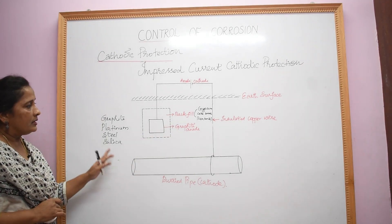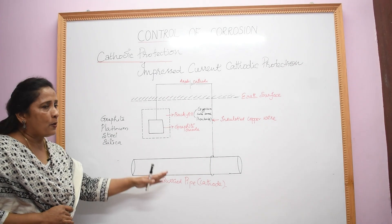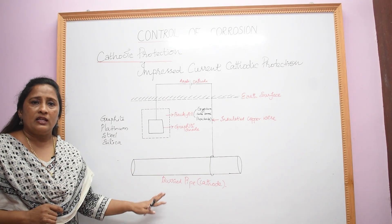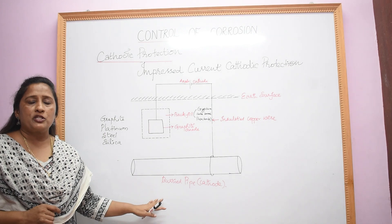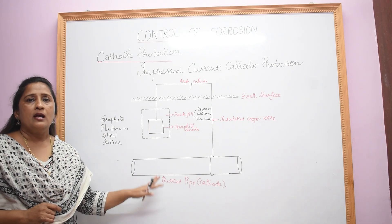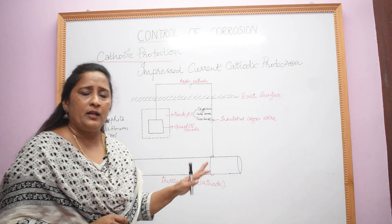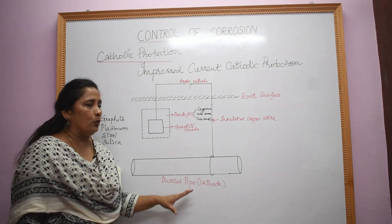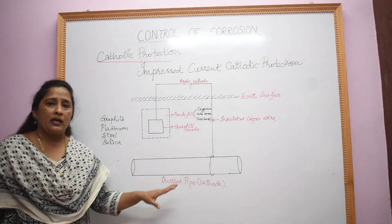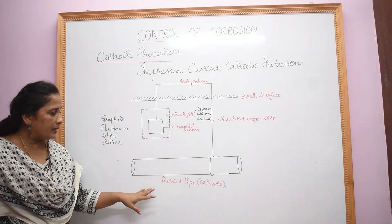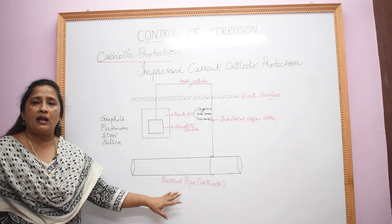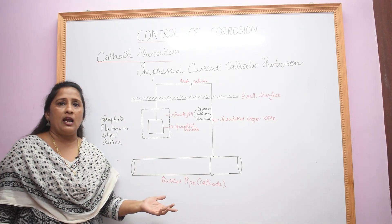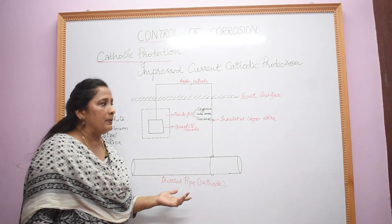Since the current is impressed upon the system from an external source, this method of protection is called impressed current cathodic protection. Normally, this method is used for protecting underground pipelines, water pipelines, oil pipelines, transmission lines, cables, etc.